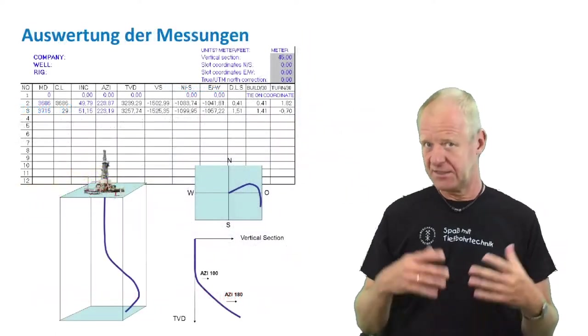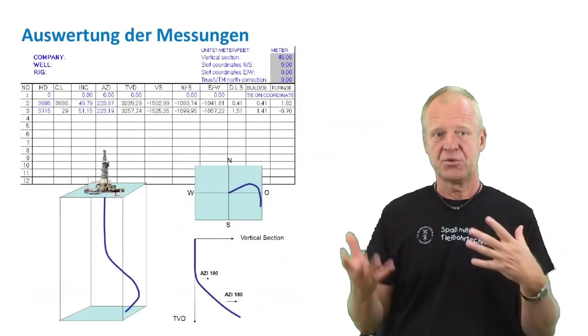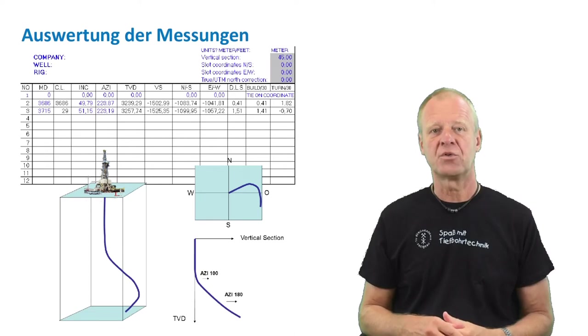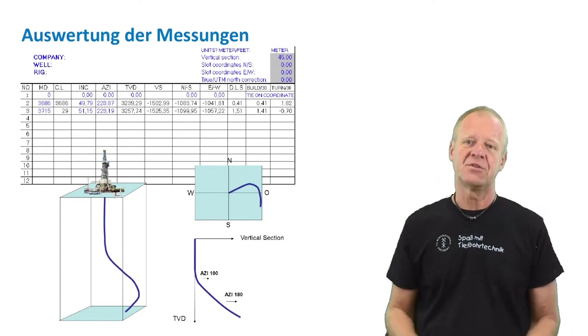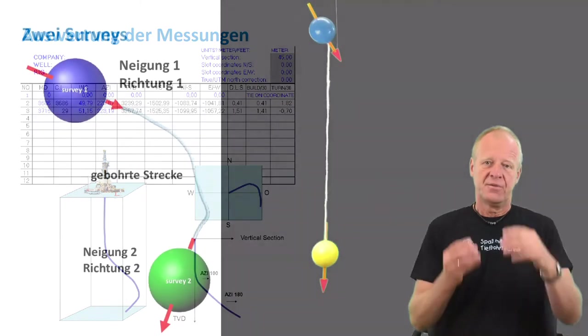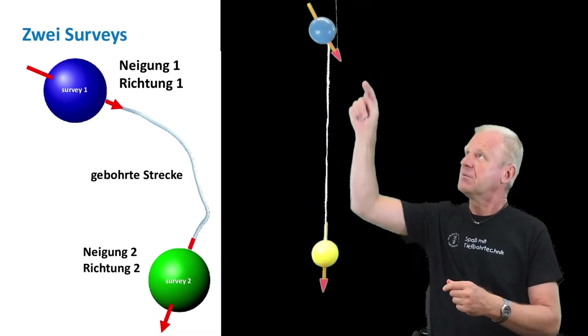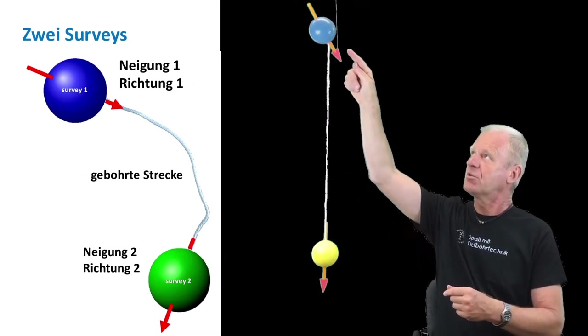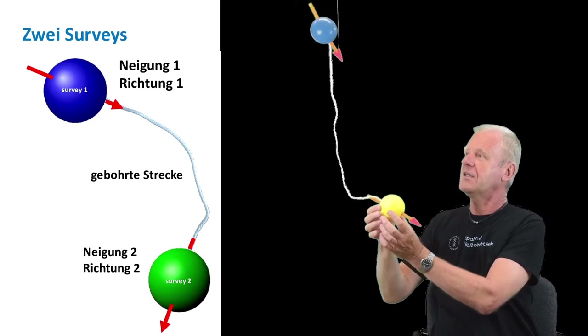These measurements, which are not error-free, are now typed into the computer and the computer uses these values to calculate the course of the well path. Here we face the next problem.